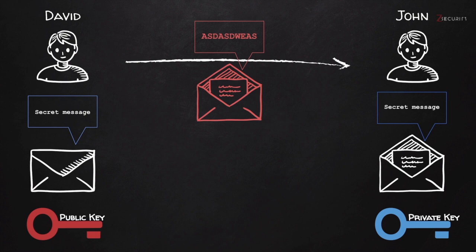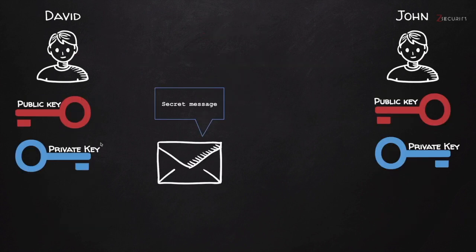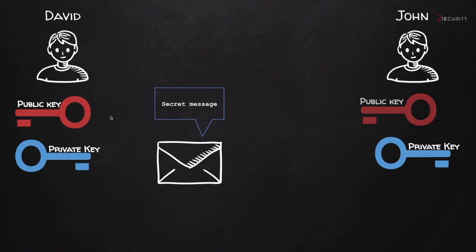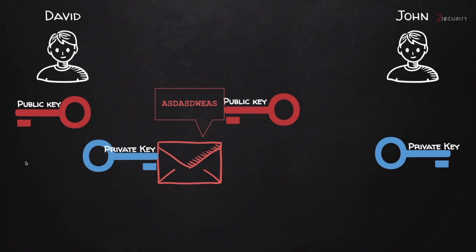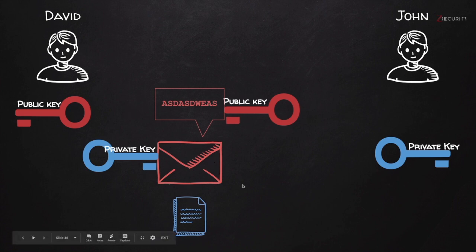To solve this problem, David will have to sign the message — this can actually be done with PGP. So again, we have David, he wants to send a secret message to John. First, he will use John's public key to encrypt the message; the message will change into gibberish. Now at this stage, instead of sending the message, David is going to sign the message with his own private key. The message is still at David's end, and what he's going to do is create a signature for this message. This signature corresponds to this message, and if anything gets modified — even one letter — the signature will change.